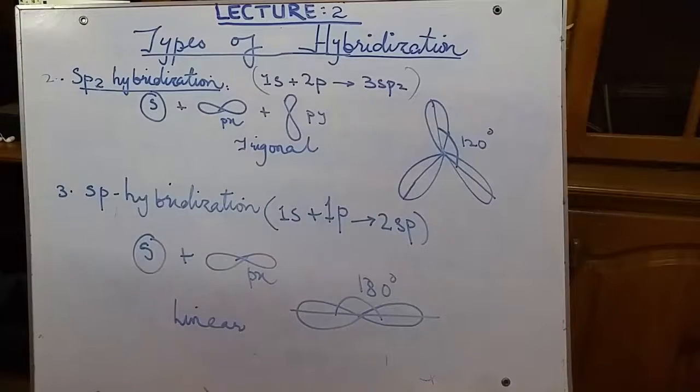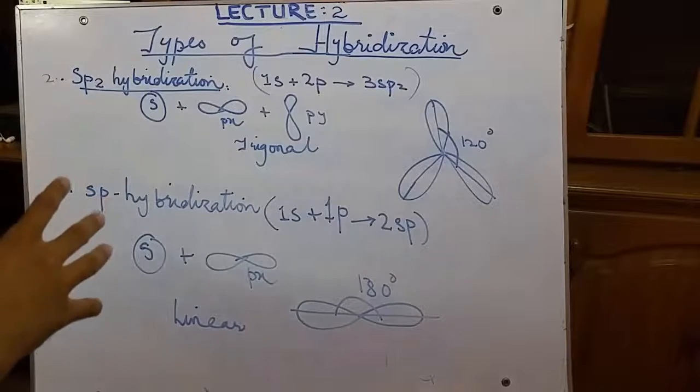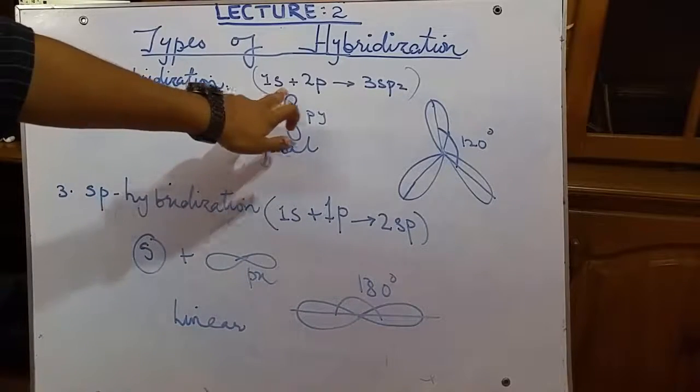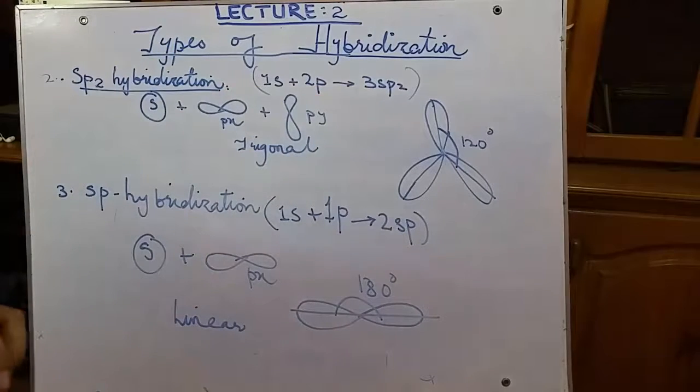Let us continue to the different further types of hybridization. Second type is sp2 hybridization. In sp2 hybridization, one s orbital and two p orbitals combine to form three sp2 hybrid orbitals.